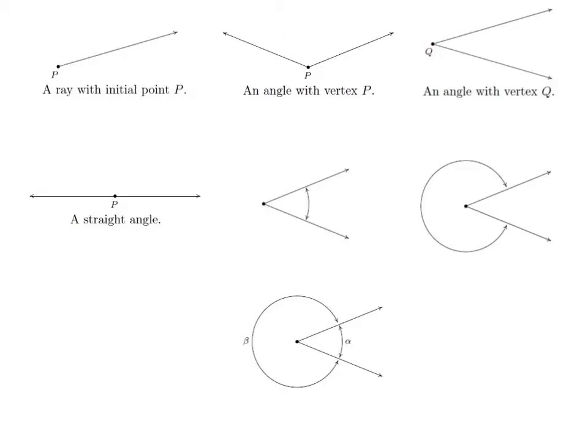You can have a straight angle, and then you can also have these two rays create this angle, which would be an acute angle, and this angle, which is an obtuse angle.